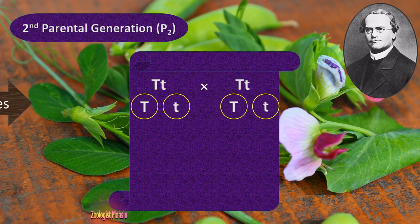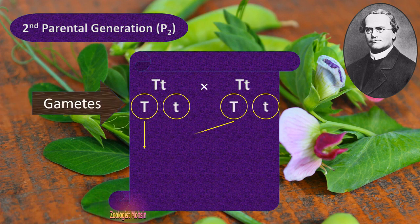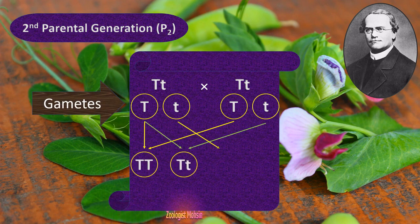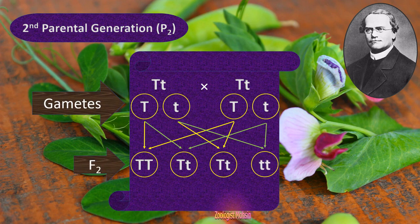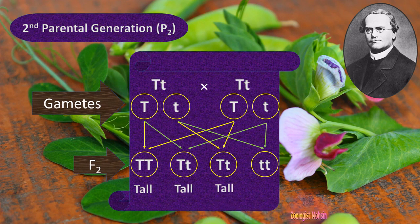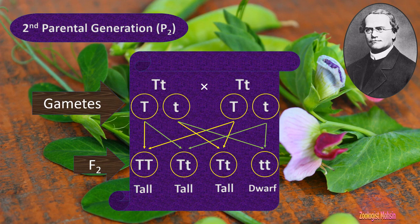These are the gametes, and these gametes will fertilize with equal probability as discussed earlier. The generation produced is F2. The first plant was tall, the second is also tall, the third is also tall, while the fourth one was dwarf. Mendel was really surprised — he had taken all tall plants, so where did this dwarf come from?